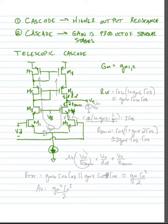Now R looking up is fairly easy. R looking up is ro6 times (1 plus gm6 times ro8), and we're neglecting body effect in this case. We can say that this is approximately equal to gm6 times ro6 times ro8.